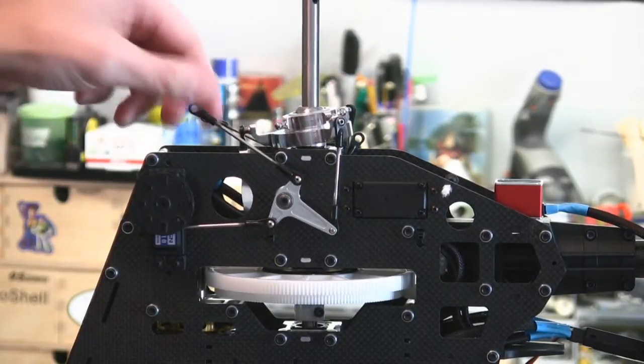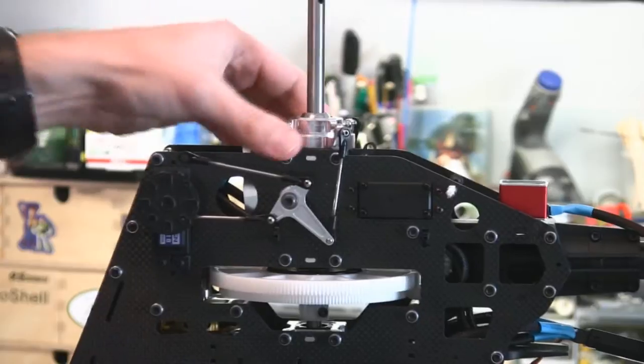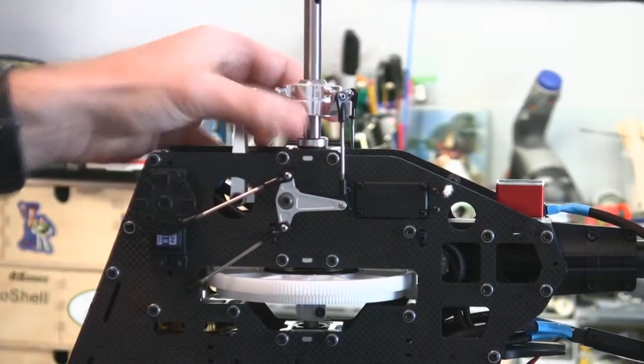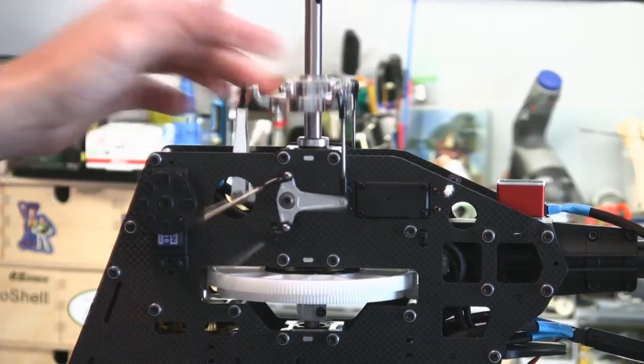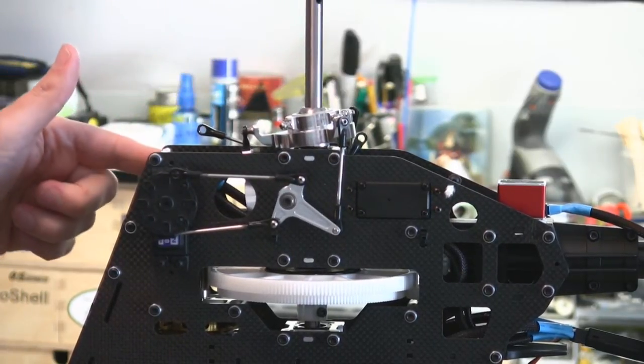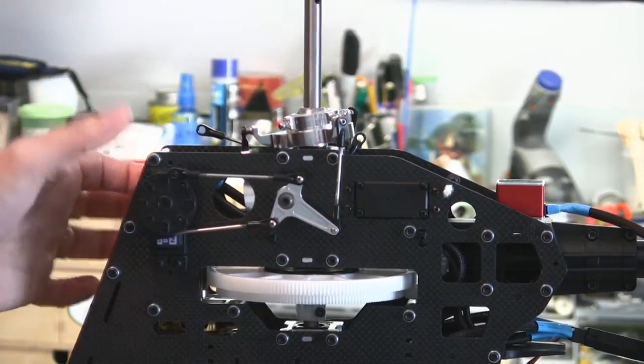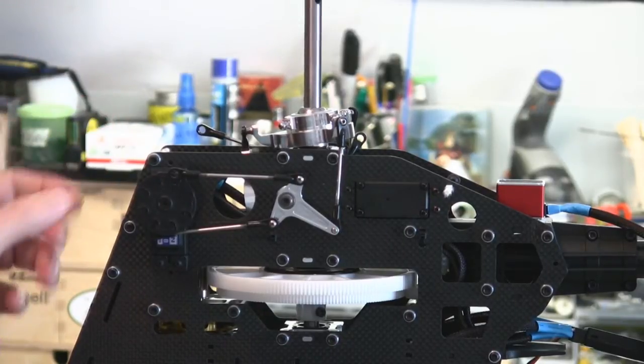So I can see the servos going this way which would push it this way. If this was up here and that gets pushed that way then it's going to go left so I know that's going in the right direction. The right servo should be doing the opposite of what the left servo is doing when you're giving it left and right aileron input, which it is.